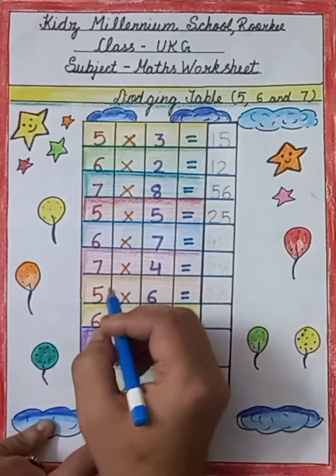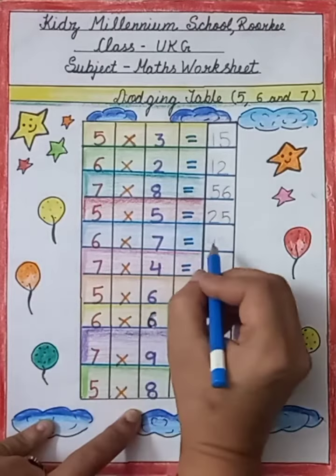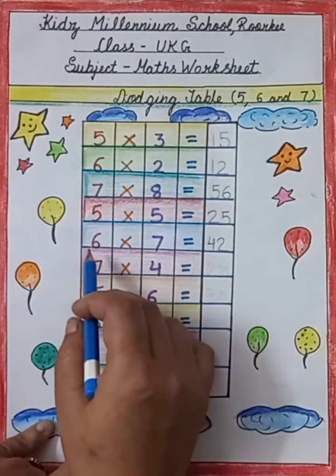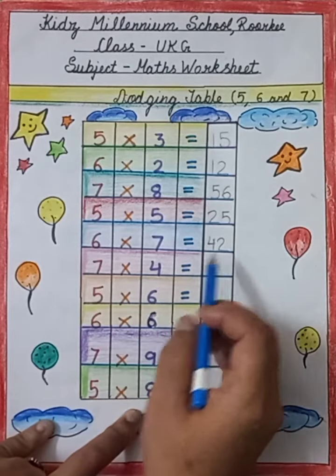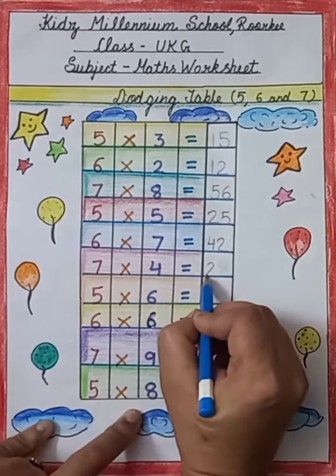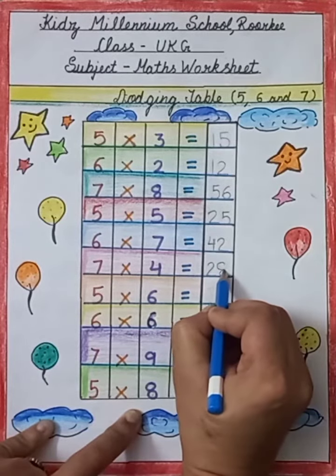This is 6 into 7 equals to 42, we will speak like this: 6 7 j 42. This is 7 into 4 equals to 28, and we will speak like this: 7 4 j 28.